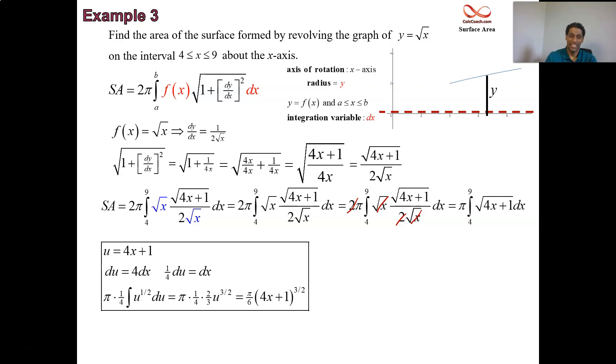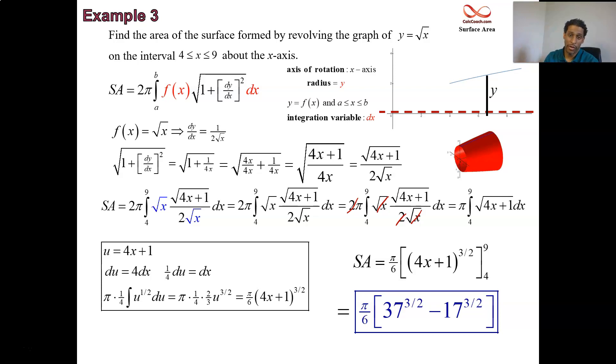That's fine. Just leave it like that. 37 to the 3 halves. 17 to the 3 halves. That's it. With the pi over 6 on the outside, we just calculate the surface area that's formed when revolving that piece of the root curve around the x axis. So be on the lookout for when the radius doesn't match the integration variable. It's in those cases where you have to replace the radius in the formula with the actual function.